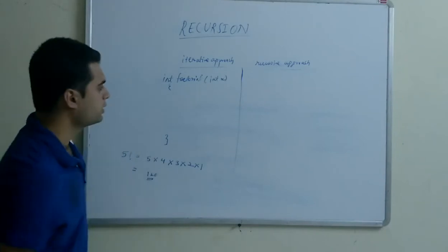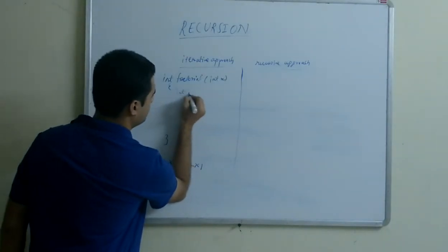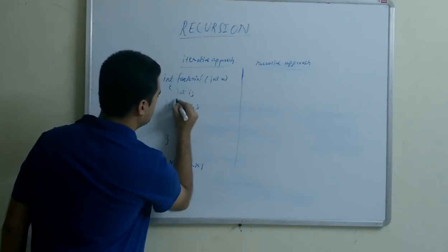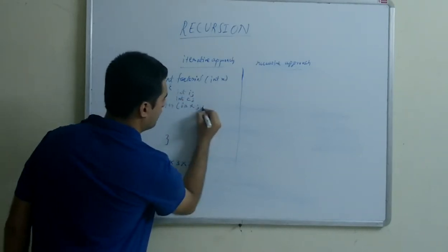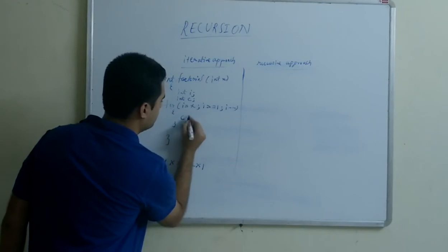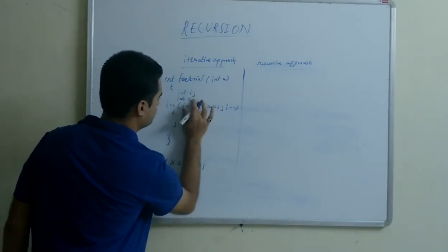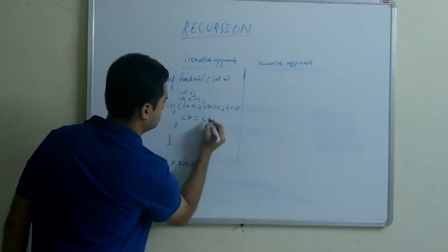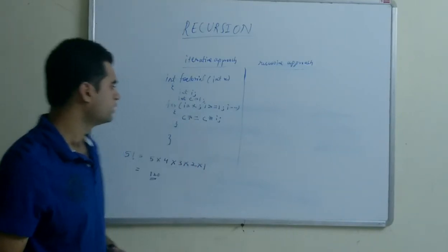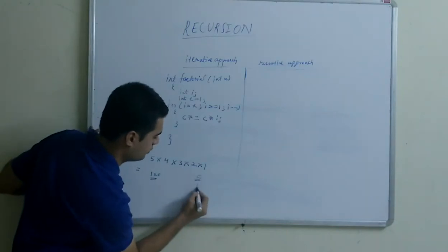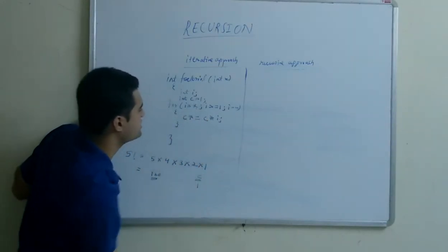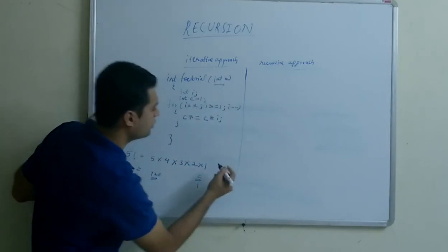For writing the same stuff in programming, what we will do is take a for loop and take one counter, then multiply the counter with the number which is being iterated in the loop. The value of i starts at x, where x is the number passed from the main function.